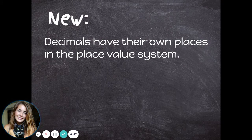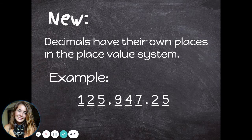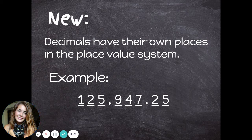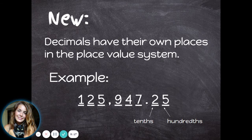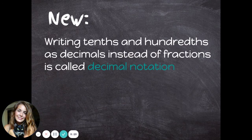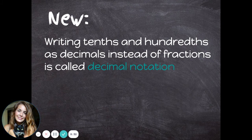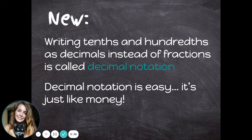Decimals have their own places in the place value system. Decimals come to the right of the ones place. So here's the same number from before — one hundred twenty-five thousand, nine hundred forty-seven. The seven was in the ones place. Notice we've added a decimal to the right of the ones place, and then after that comes the tenths place, then the hundredths place. We could add another digit after that — that would be called the thousandths place — but for now, we're just focusing on tenths and hundredths. Writing tenths and hundredths as decimals instead of fractions is called decimal notation. Decimal notation is easy because it's just like money. If you've ever dealt with money, you already have some experience with decimal notation.